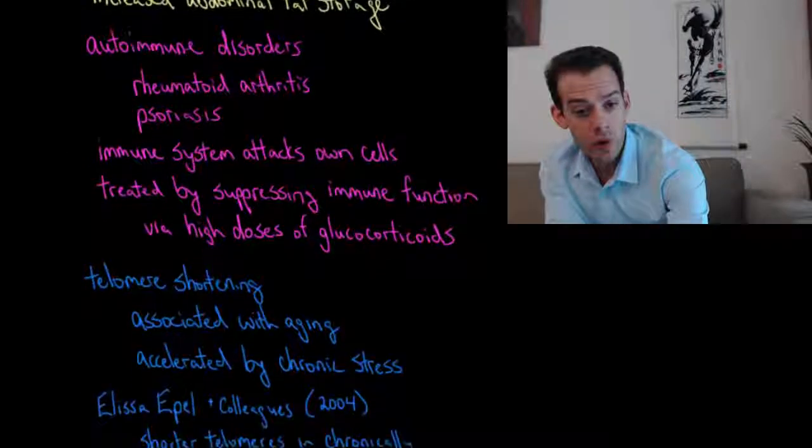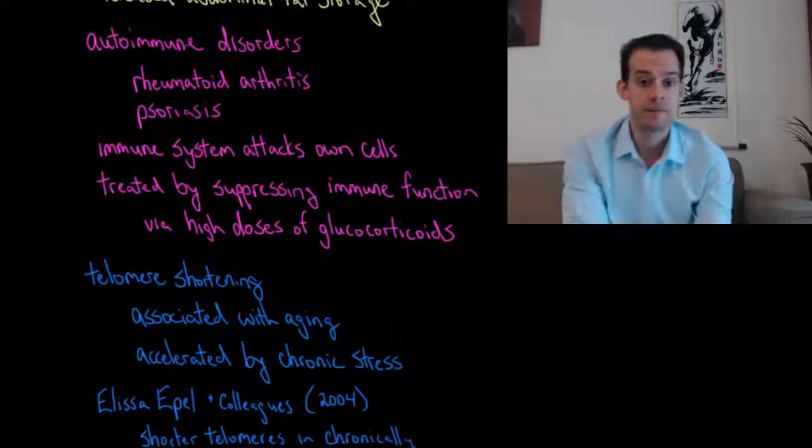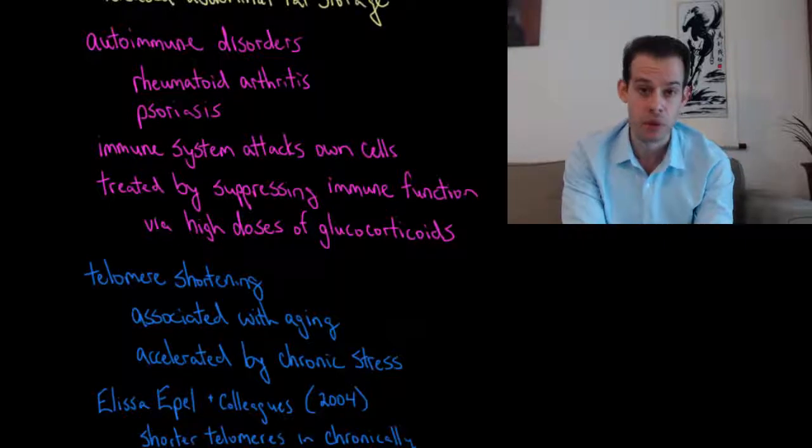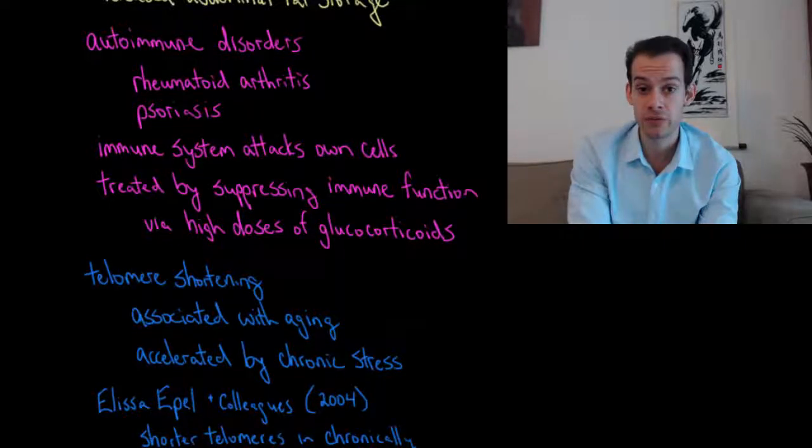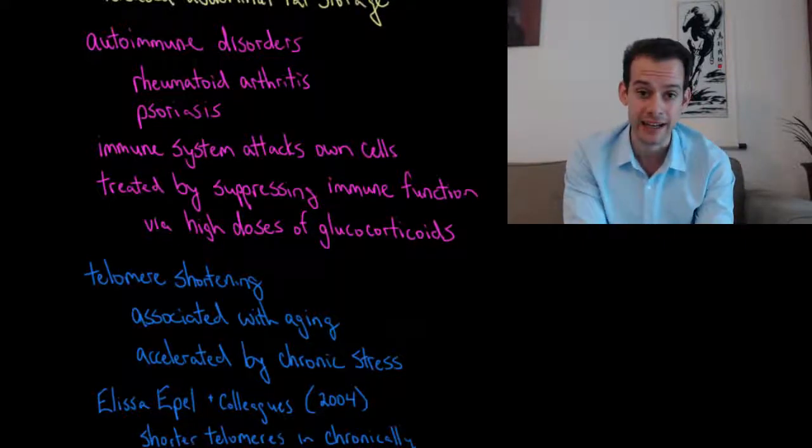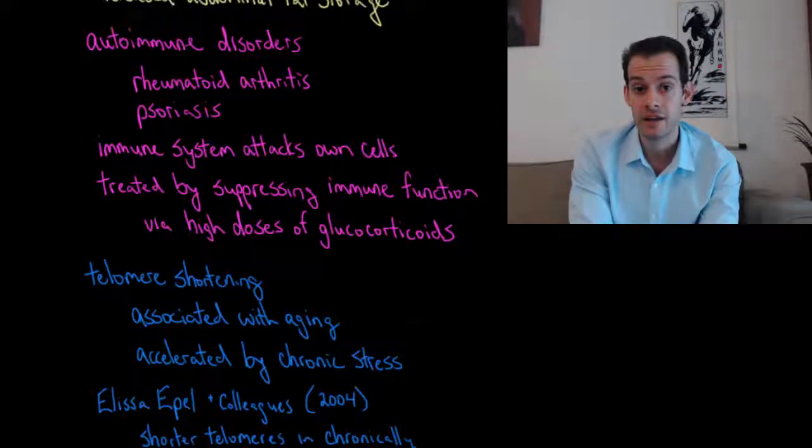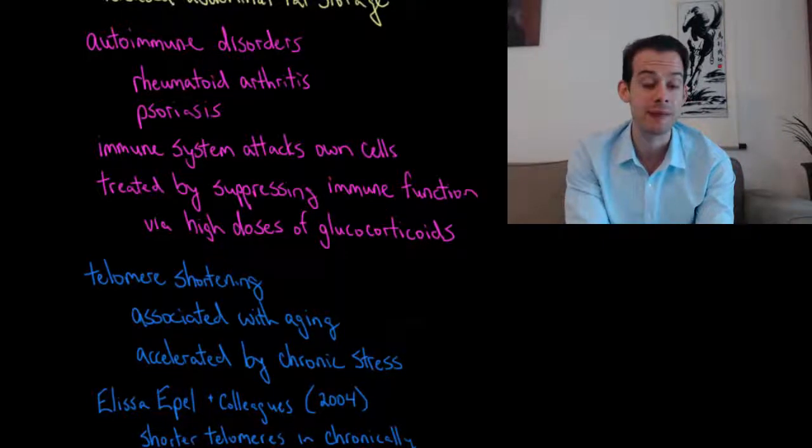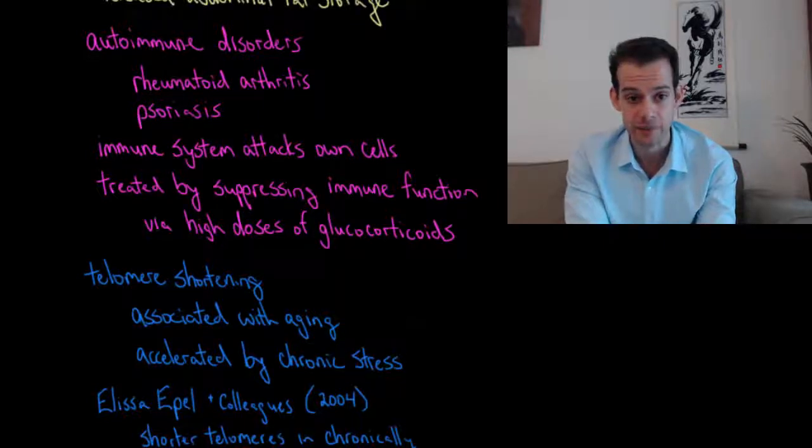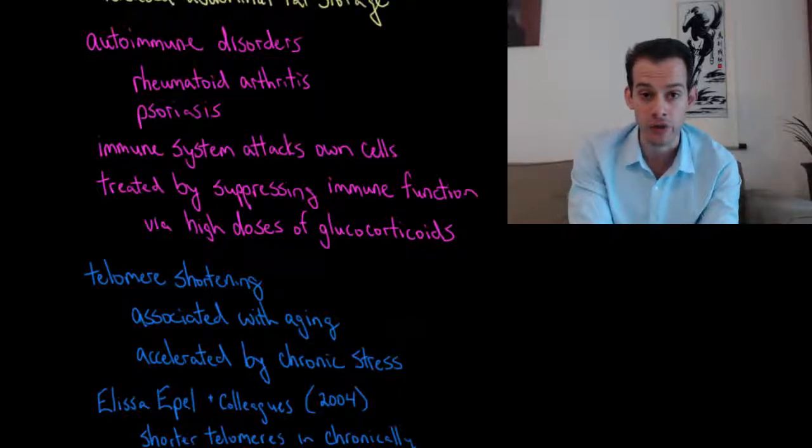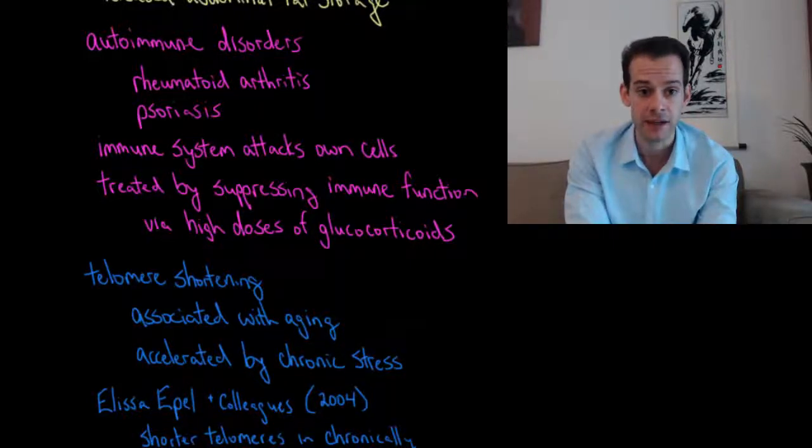Another way we can see how glucocorticoids relate to the immune system is with autoimmune disorders. So an autoimmune disorder is a disorder where the immune system incorrectly begins attacking healthy cells. It's misidentifying these as invaders or dangerous cells. And so it starts attacking them. And one example of this we saw in a previous unit was multiple sclerosis. And in multiple sclerosis, the immune system incorrectly begins attacking the myelin on neurons and breaking it down.